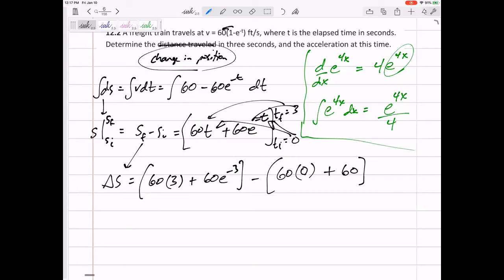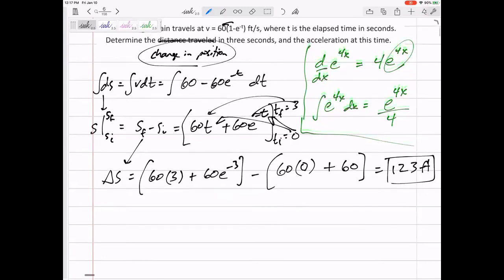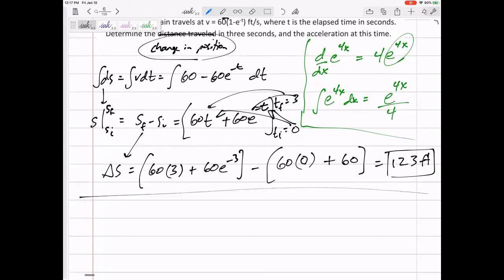All right. So, then I can just plug that in my calculator. E is just a number, 2.73 something in your calculator. Plug this in. And I've got 123 feet. So, change of position, 123 feet.